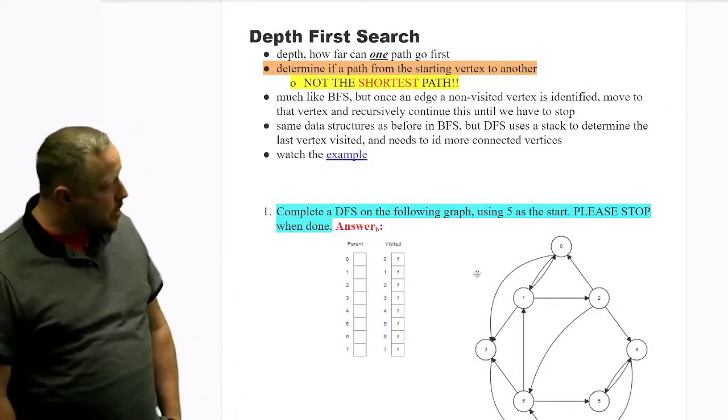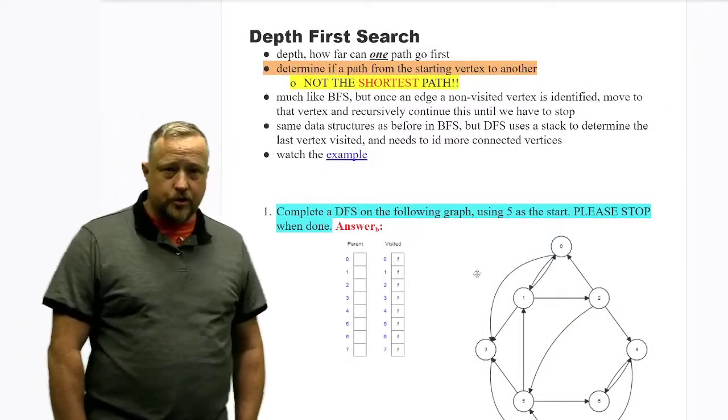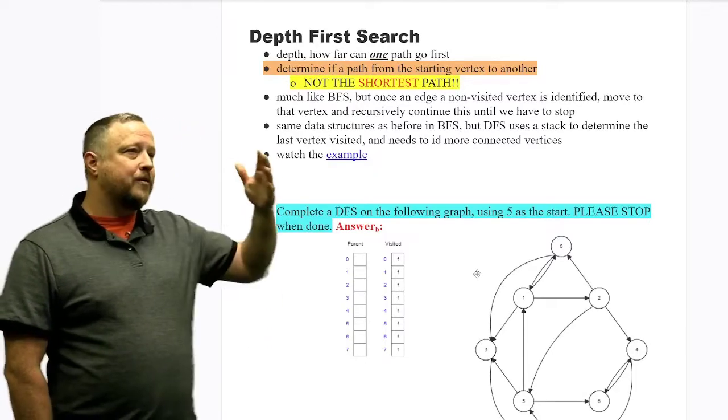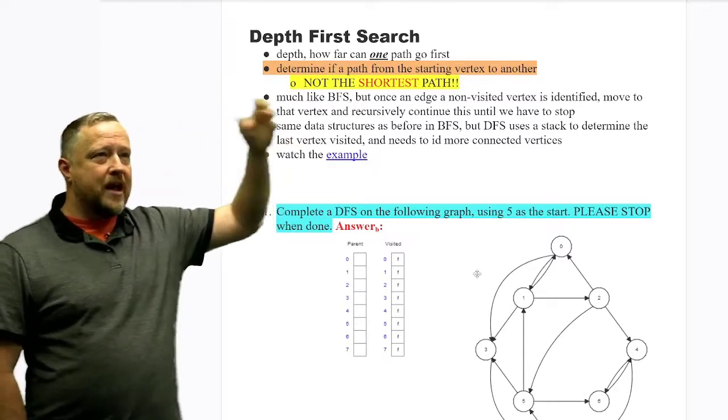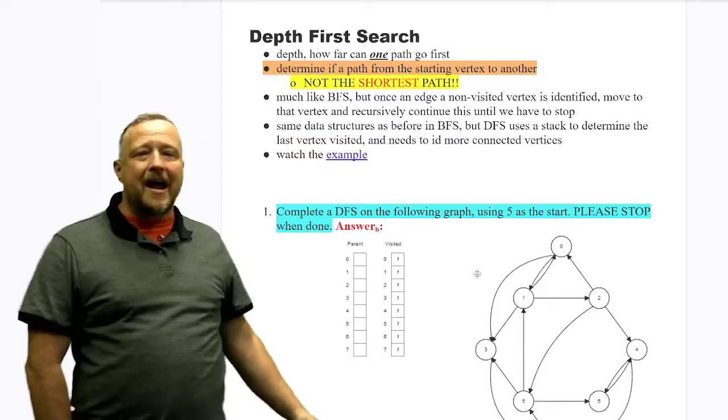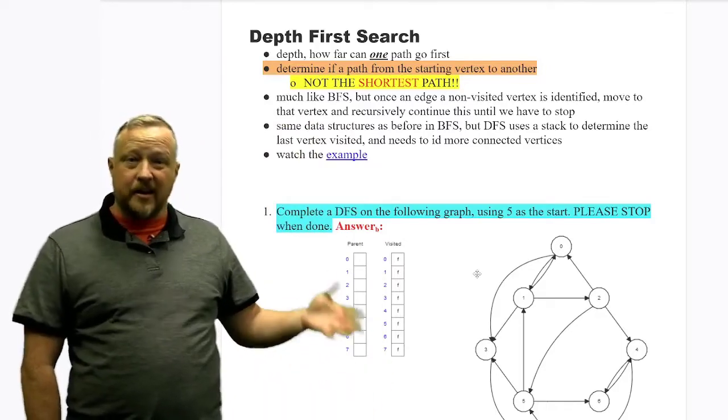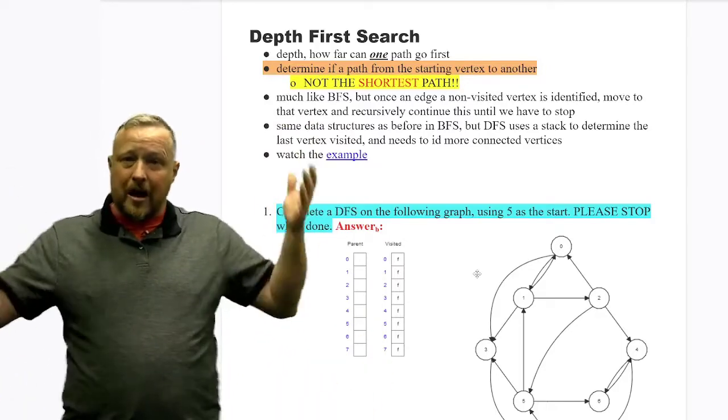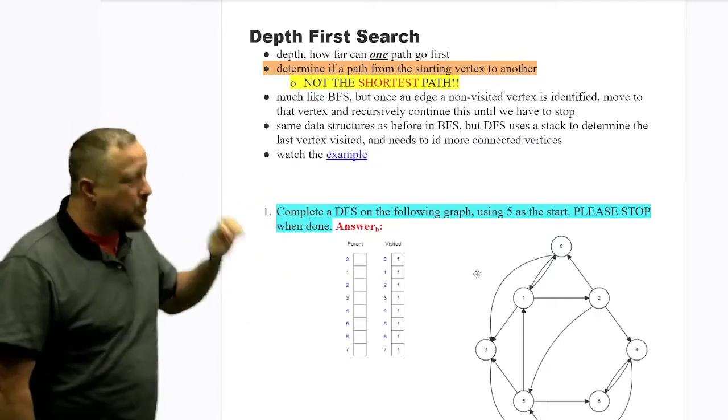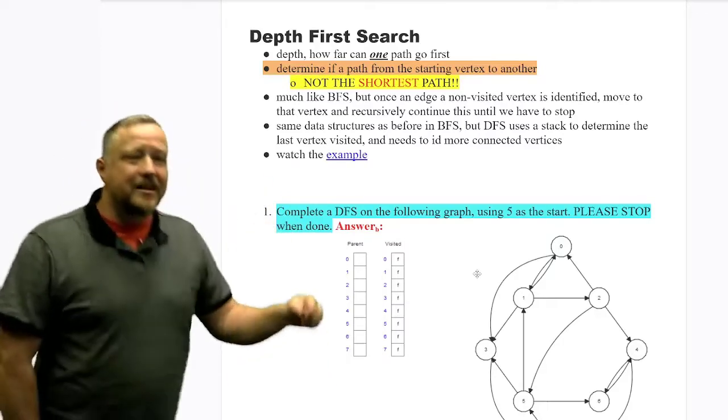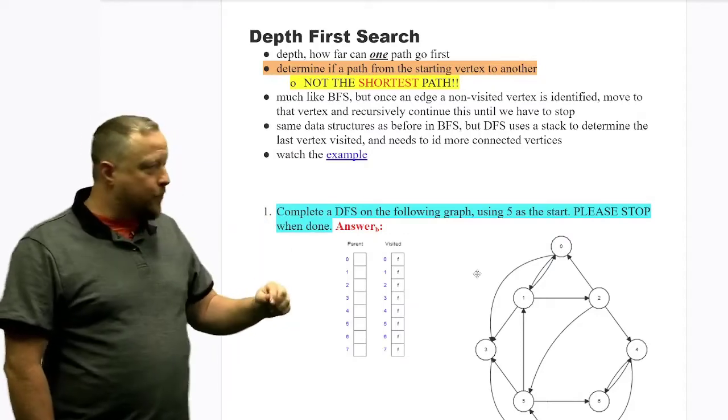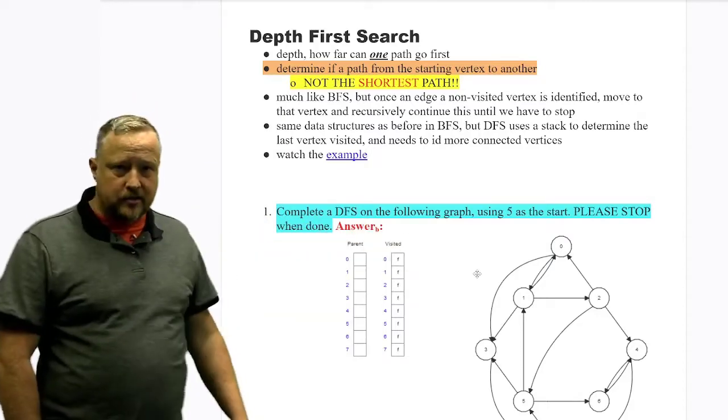So our next algorithm is depth first search. Think of it basically as we'll go down a path as far as we can in a graph and then slowly come back to see what other options that we had. But the overall goal is just to determine if there is a path from the starting vertex to another vertex. That's it.